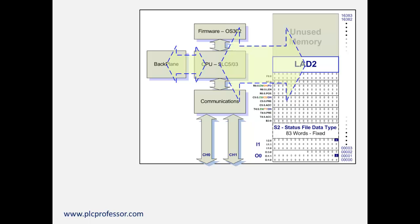Here we have a complete diagram for a programmable logic controller — not a programmable automation controller using the Logix engine, but the older family of processors. We have memory RAM, and in there we see the basic structure for SLC 500 and MicroLogix. We have output and input tags, timers, counters, control, integers, and floating point. We also have ladder 2, which is the actual program, and S2, the status file. Data flow to and from memory is controlled by the CPU, which has a supervisor called firmware.